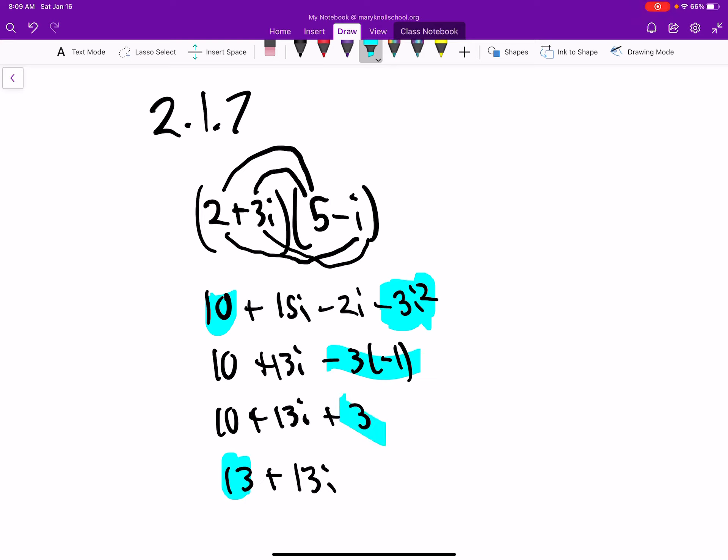So you can see the steps happen here, and then also this 15i, 15i minus 2i is 13i, so there we go.